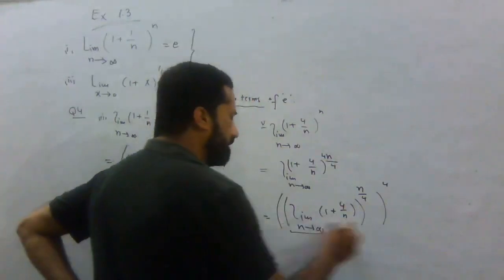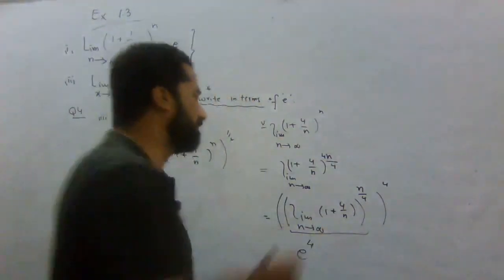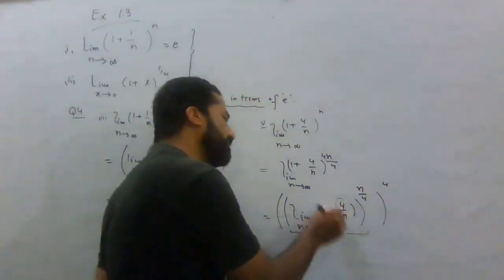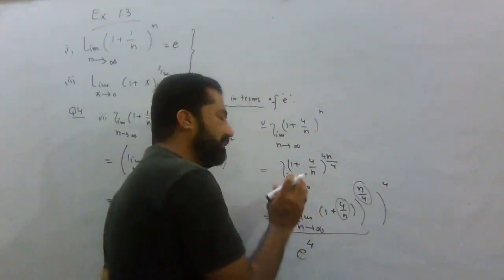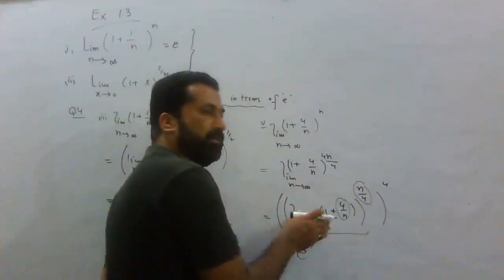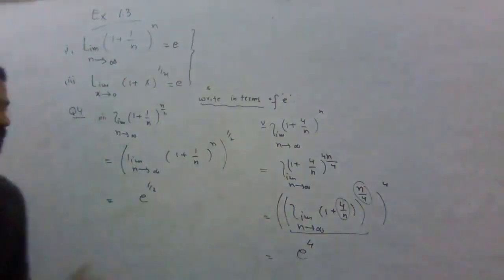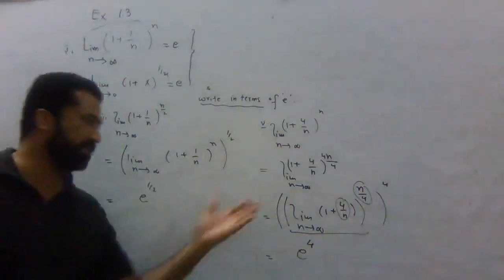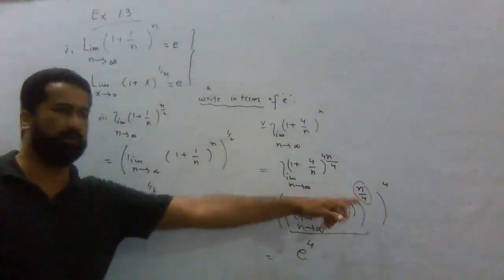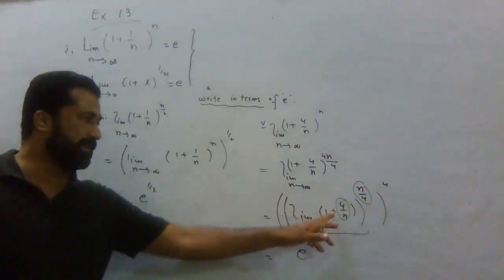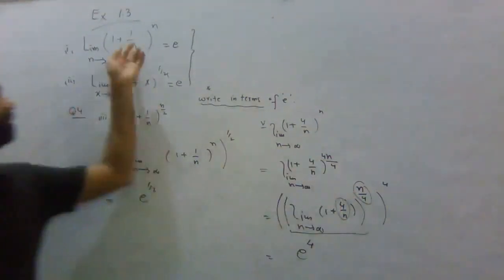The inner bracket value equals e, since (1 + 4/n)^(n/4) → e as n → ∞. If you have 4/n then the corresponding reciprocal exponent is n/4. Similarly, if you have minus 4/n, then the exponent becomes minus n/4. The sign of the fraction and the sign of the power follow the same rule.